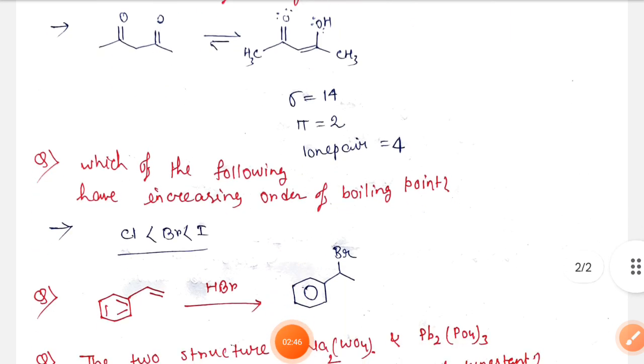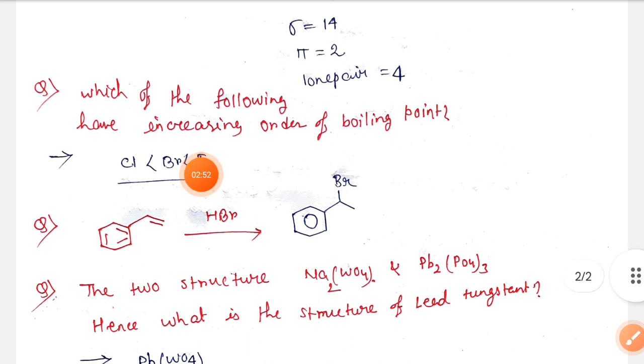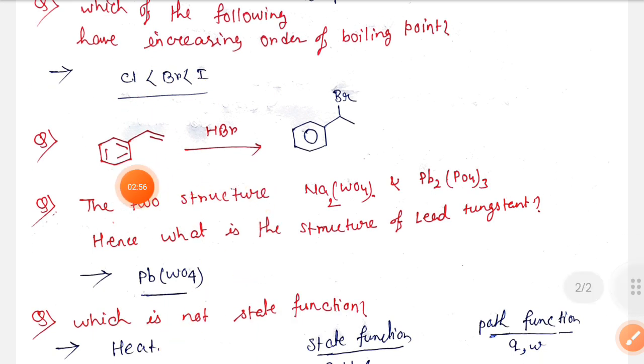Next, which of the following have increasing order of boiling point? Here the correct option is iodine is greater than bromine is greater than chlorine. Next, for this compound, if we add HBr, this will be produced. As this is HBr addition, so most probably Markovnikov product is produced.